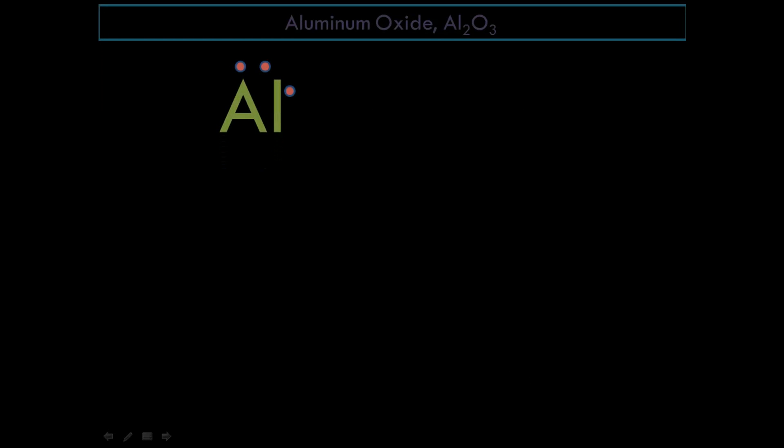Aluminum is a group 3 element. It has 3 valence electrons, electrons that participate in bonding. Oxygen is a group 6 element. It has 6 valence electrons.